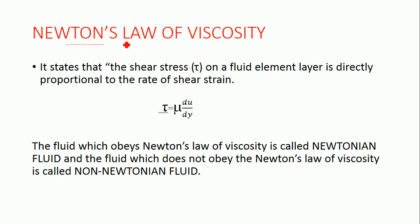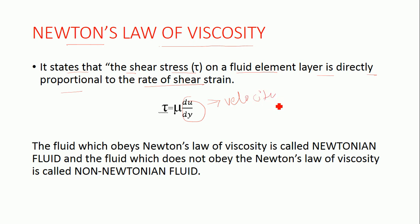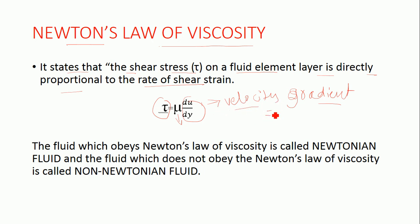Now let us discuss Newton's law of viscosity. Newton's law of viscosity states that the shear stress on a fluid element layer is directly proportional to the rate of shear strain, meaning shear stress is directly proportional to the velocity gradient. The formula is tau equals dynamic viscosity times the velocity gradient, which equals the rate of shear stress as discussed in the previous lecture on viscosity.